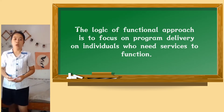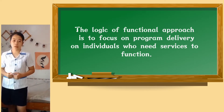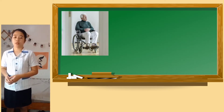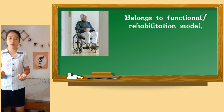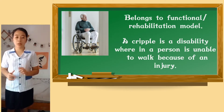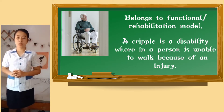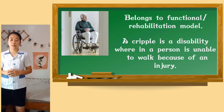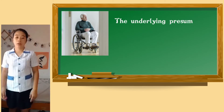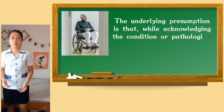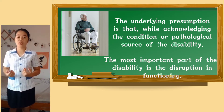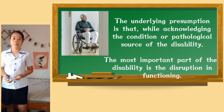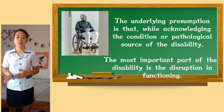An example belonging to the functional or rehabilitation model is a cripple — a disability wherein a person is unable to walk because of an injury or illness. The underlying presumption of the functional model is that while acknowledging the condition or pathological force of the disability, the most important part of the disability is the disruption in functioning.